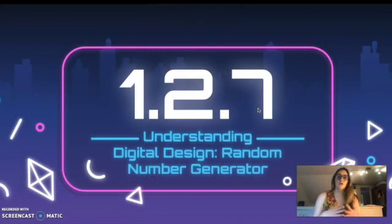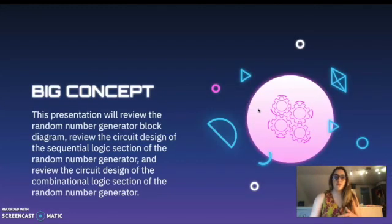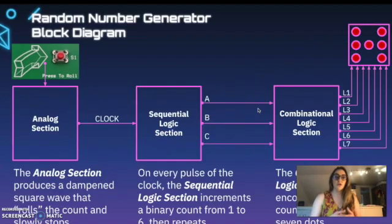Okay everyone, so this lesson is on 1.2.7 which is the digital component of the random number generator. We're going to be looking at the block diagram again and looking at how we transition from the analog section to the digital section of this circuit in this presentation.